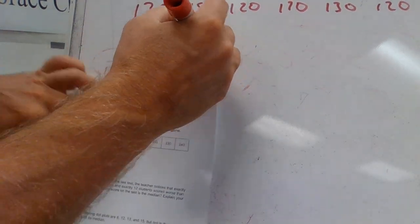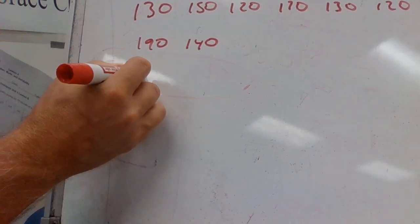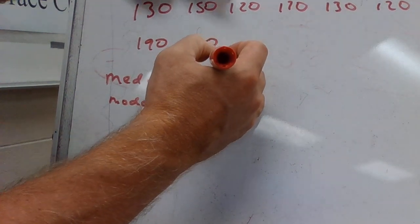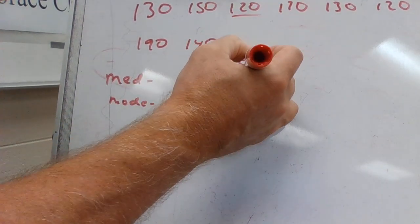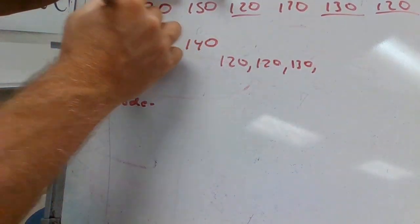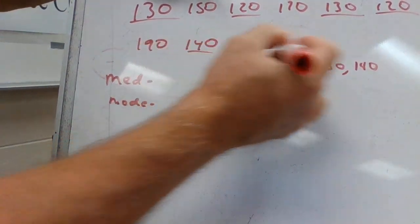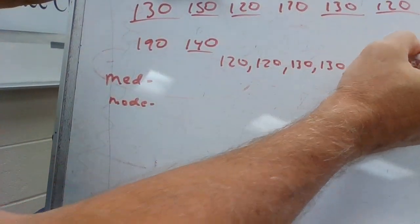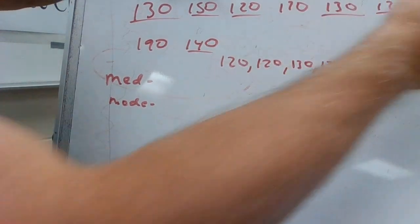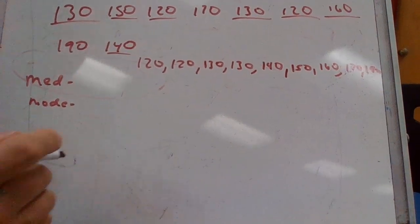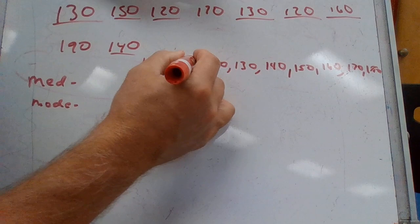I'm going to find the median, then find the mode. For the median, I'm going to put them in numbered order: 120, 120, 130, 130, 140, 150, 160, 170, 120, 190. We can see all of that. It's the middle number, so 140 is the median.